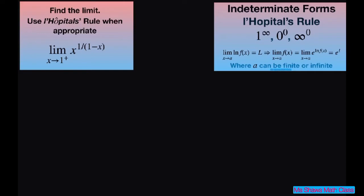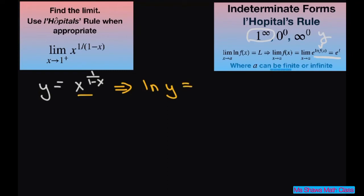It has the indeterminate form 1 to the power of infinity. We're going to write this as y equals x to the power of 1 divided by 1 minus x. Then we're going to take the natural log of both sides, giving ln of y, and on this side we're going to pull the power down. This is going to be 1 divided by 1 minus x times ln of x. To simplify, that would be ln of x divided by 1 minus x.